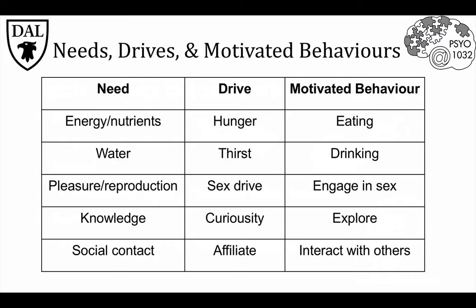Some needs are obvious and universal, like the need for food — we need energy and nutrients and certainly can't live without them. So the drive of hunger prompts a motivated behavior; in this case, eating. This trio of need, drive, and behavior is seen in all animals, and in fact the biological processes that trigger and control hunger are very similar in humans, rats, and mice.